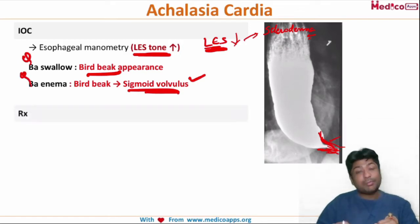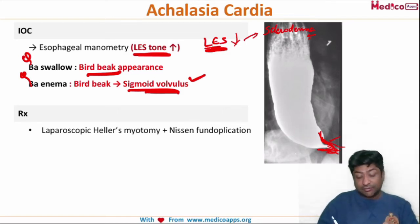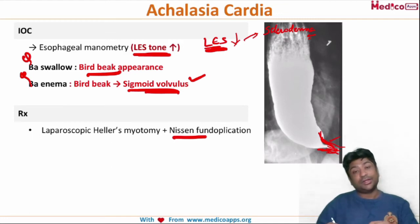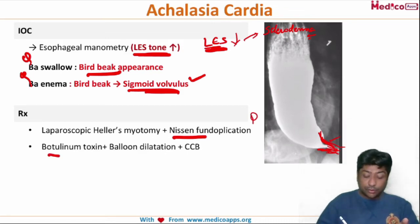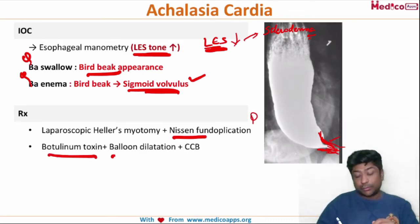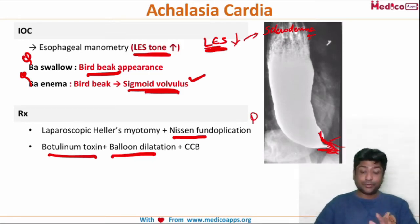Management of achalasia is basically surgical — you can go for a laparoscopic Heller myotomy, where you cut the muscles so that it relaxes, with fundoplication. If the patient is not fit for surgery or refuses, then you can give botulinum toxin, or go for balloon dilatation, or use calcium channel blockers if the patient is not agreeable to anything else. This completes achalasia cardia.